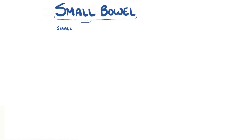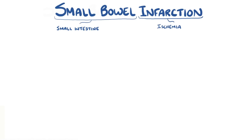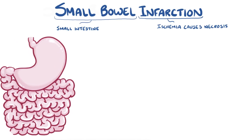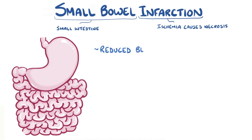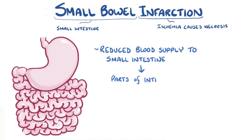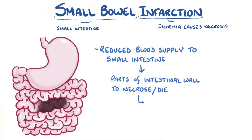Small bowel refers to the small intestine. An infarction is when ischemia, which is an inadequate blood supply, causes necrosis, or tissue death. So a small bowel infarction happens when there's a reduced blood supply to the small intestine, and this causes parts of the intestinal wall to necrose, or die, which can be life-threatening.